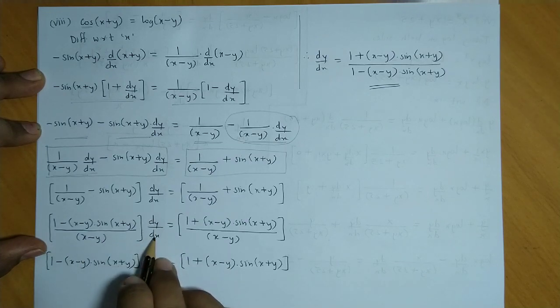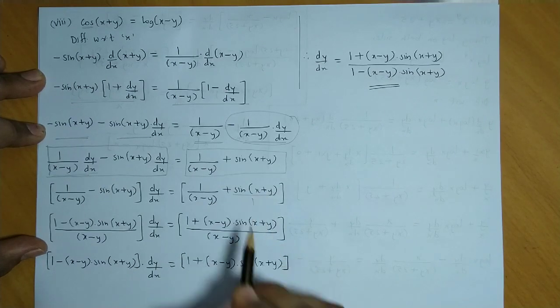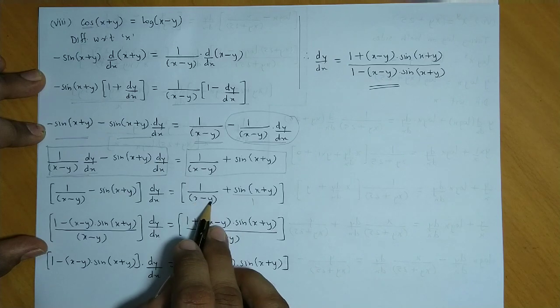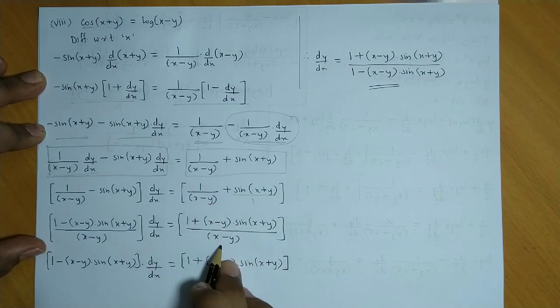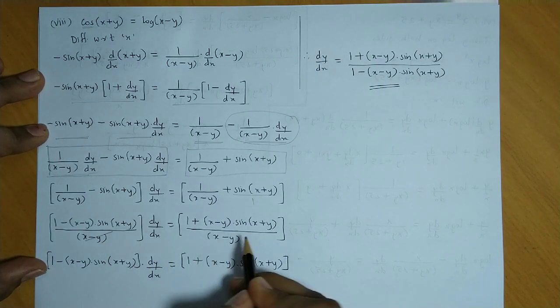And dy by dx is equal to, here we equalize the denominator. This is 1 here, so 1 into 1, that is 1, and x minus y into sin of x plus y, upon x minus y. Now on both the sides we have x minus y. On both sides, in the denominator, on this side and that side, so we cancel both of these.